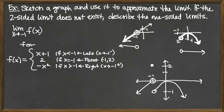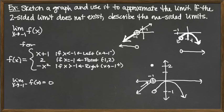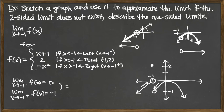Now we can assess the limits graphically. The limit as x approaches negative 1 from the left comes from the line part — we're approaching the hole on the x-axis, so that limit equals 0. From the right-hand side, the limit as x approaches negative 1 from the positive side comes from the parabola — we're approaching the open circle at y equals negative 1, so the right-hand limit is negative 1. These two values don't equal each other.